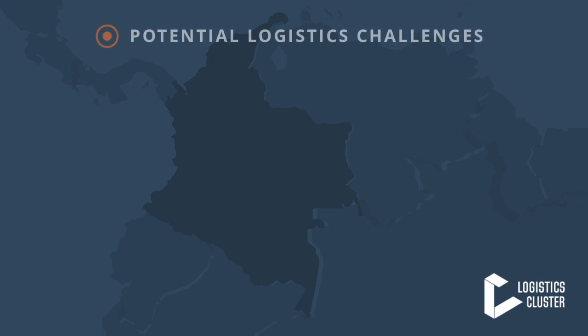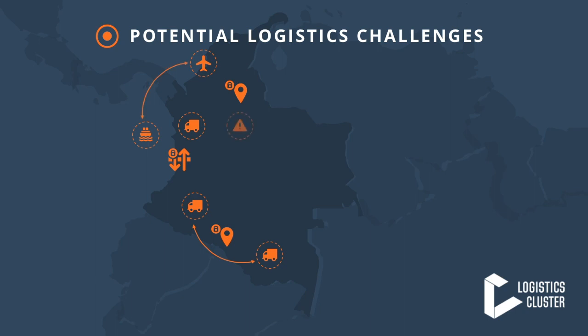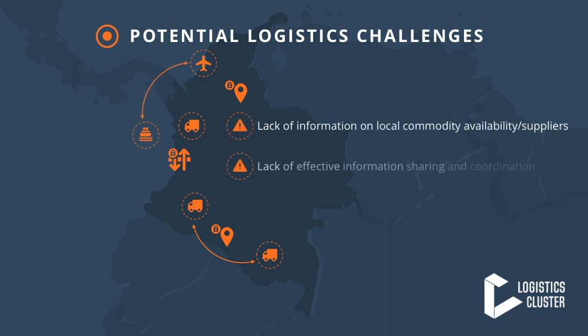The fourth information-gathering aspect of the GNA asks you to identify what the potential upcoming logistics challenges might be if the current situation were to deteriorate. You should consider the possible consequences of current or anticipated restrictions on the logistics plan of your organization. For example, if a lockdown has just been put in place, how might this affect your supply chain? Also consider potential shortages in suppliers, how and when to gain relevant logistics information, and any other potential risks.